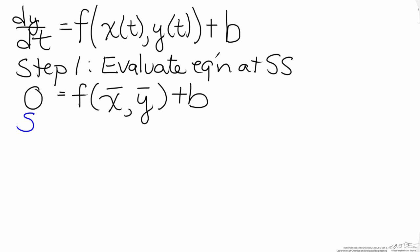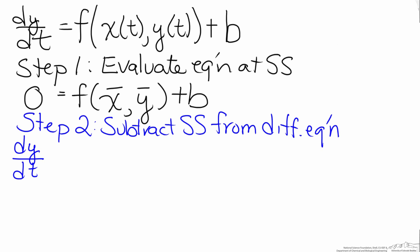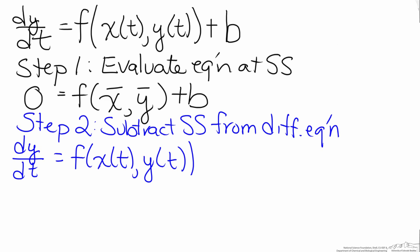The next step is to subtract the steady state from the differential equation. When we do that, the left hand side will just be dy/dt. On the right hand side, the b's will cancel out, so all that we are left with is our function evaluated as a function of time about x and y, minus the evaluation of the function at the steady state values x-bar and y-bar.